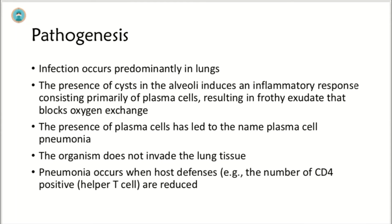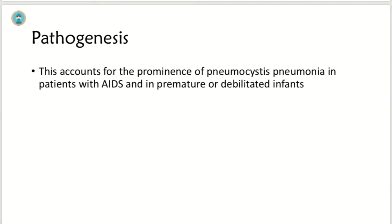The presence of plasma cells has led to the name plasma cell pneumonia. The organism does not invade the lung tissue. Pneumonia occurs when host defenses — for example, the number of CD4-positive helper T cells — are reduced, meaning the patient is immunocompromised. This accounts for the prominence of Pneumocystis pneumonia in patients with AIDS and in premature or debilitated infants.